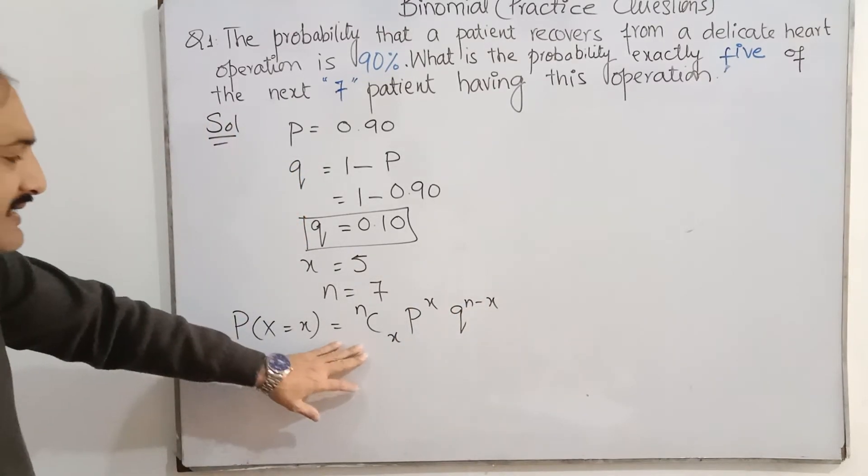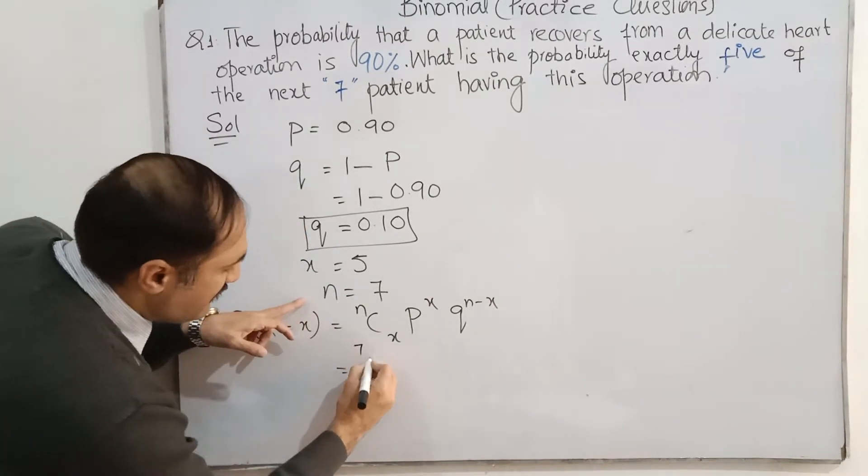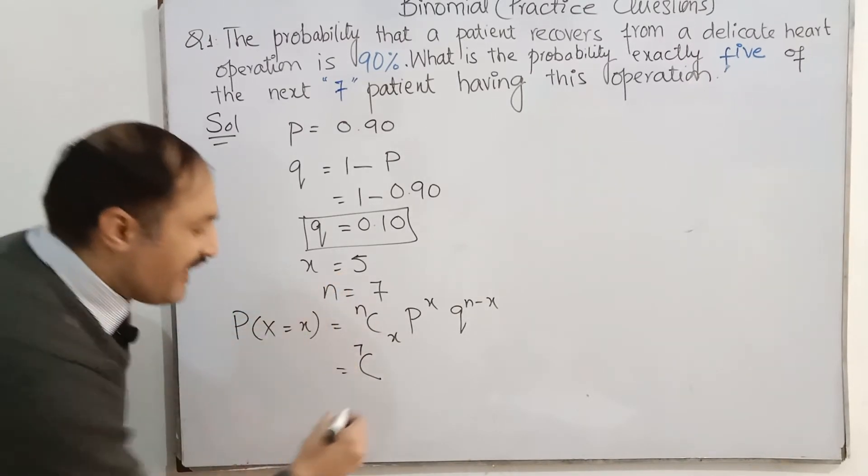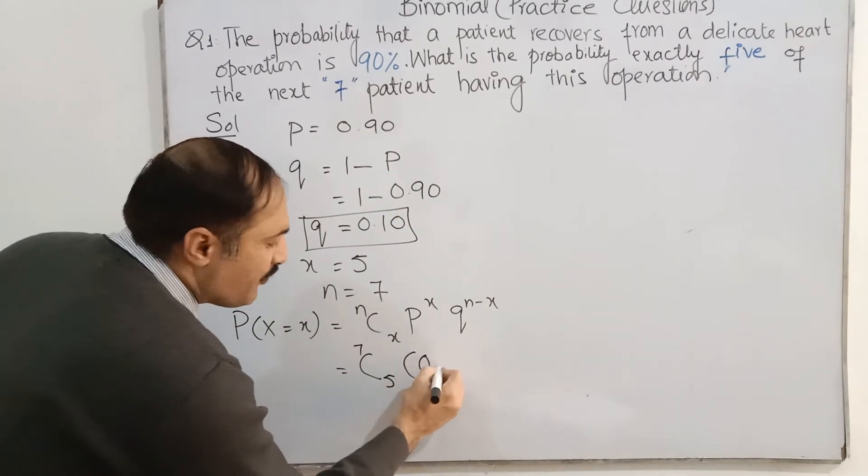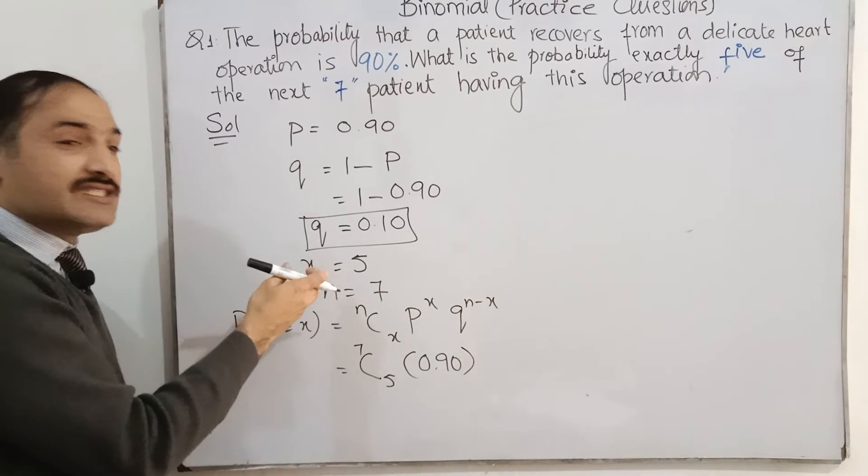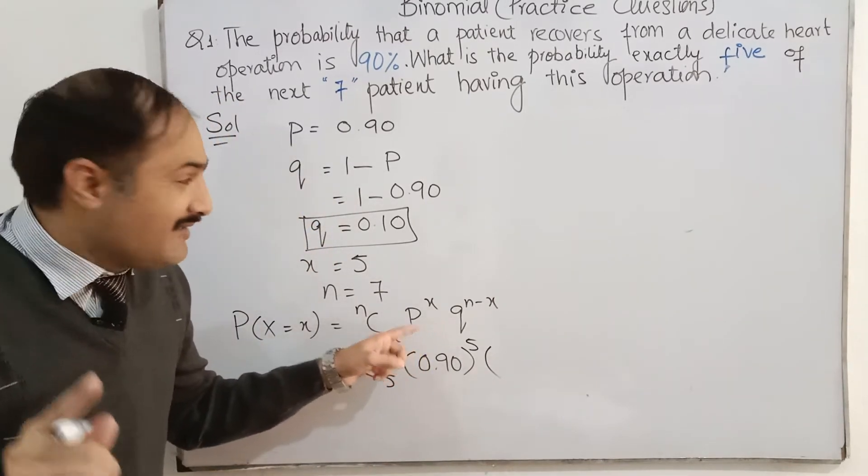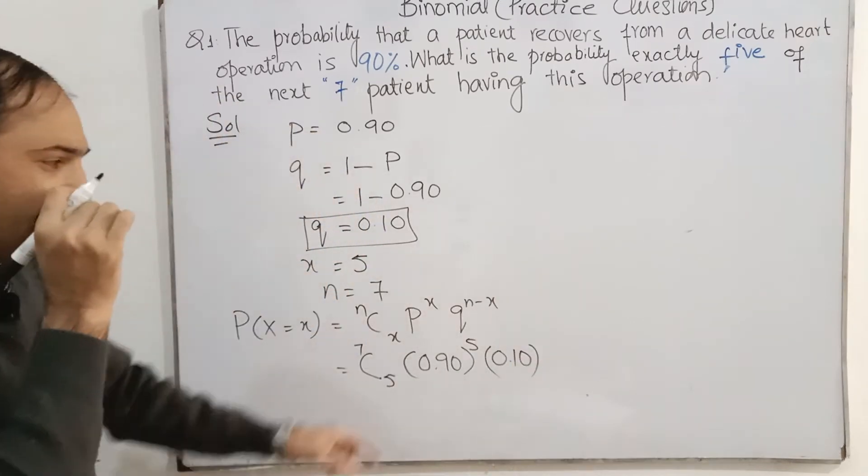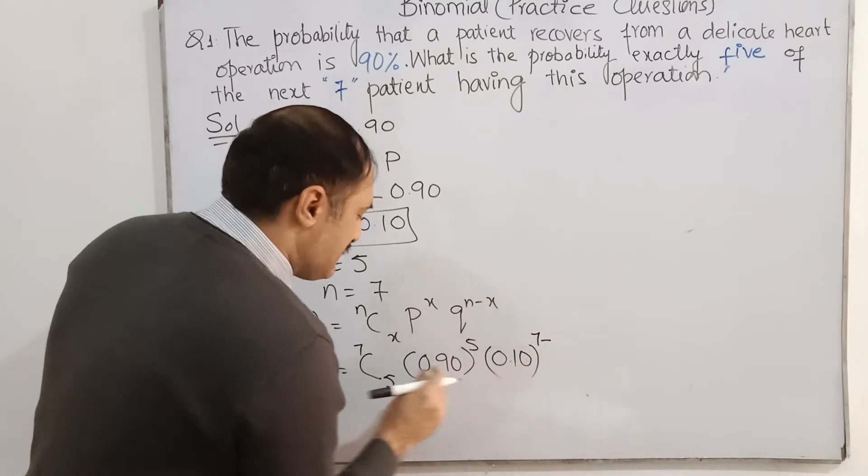So here is n. n is 7, C, what is the value of x? x is 5, exactly 5 successes. So here is P, 0.9, 90% means 0.90. And x, number of successes, is 5. And probability of failure is Q, 0.10. And n independent trials are n 7 minus 5.